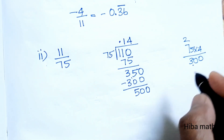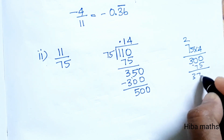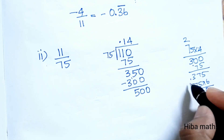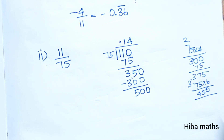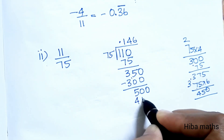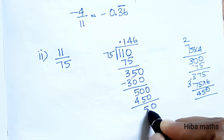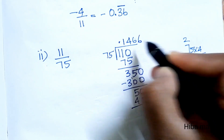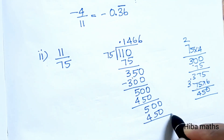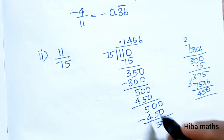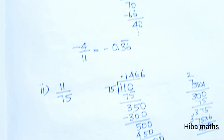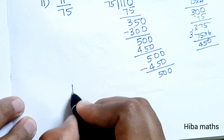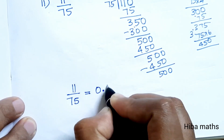Now continuing: 500 divided by 75 goes 6 times. 6 times 75 is 450. 500 minus 450 is 50. Bringing down 0 gives 500 again, and 6 times 75 is 450, remainder 50. So the answer is 0.1466... repeating.